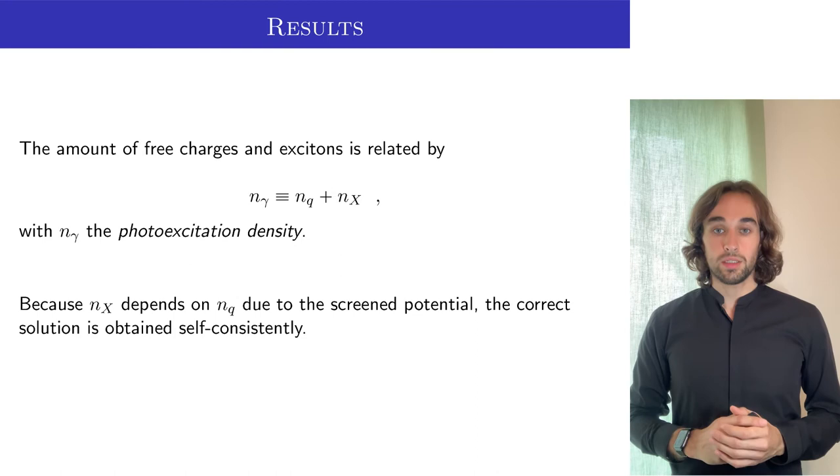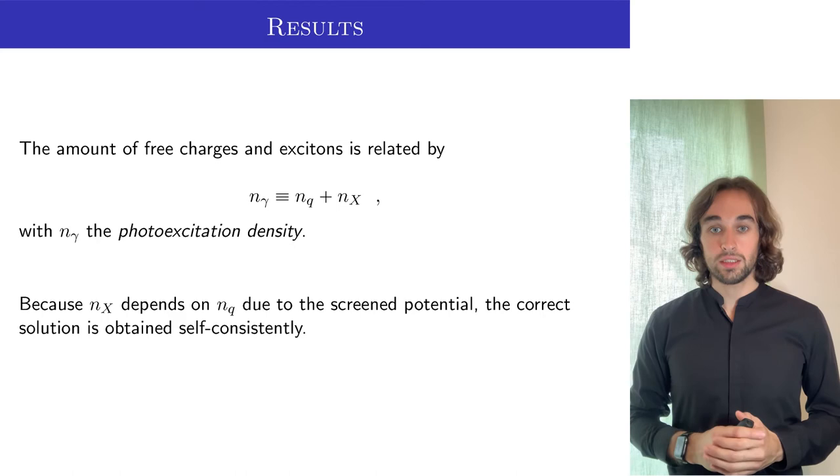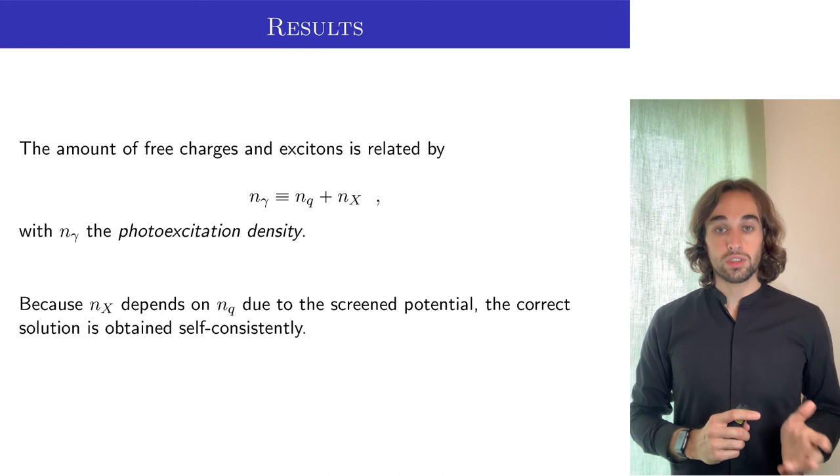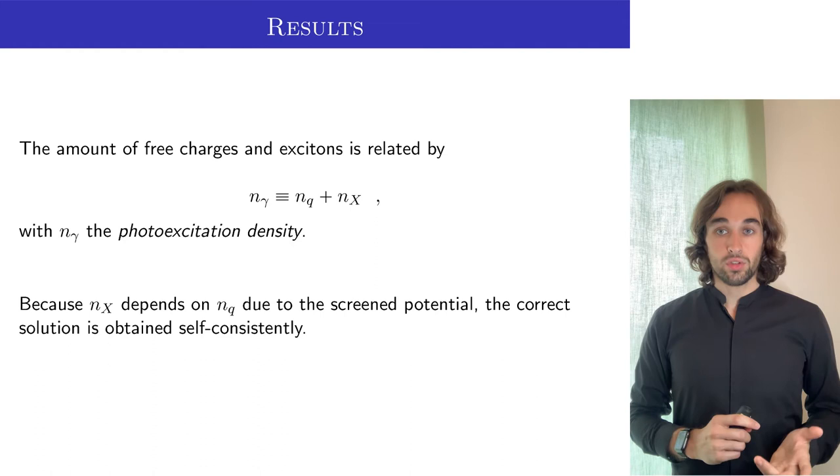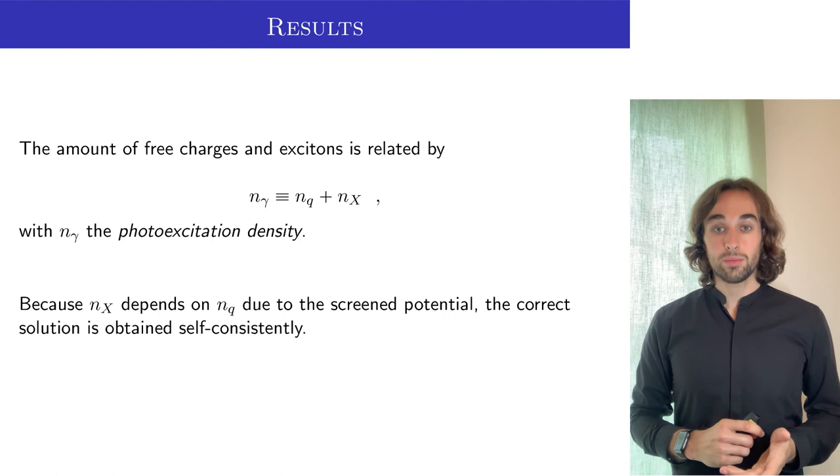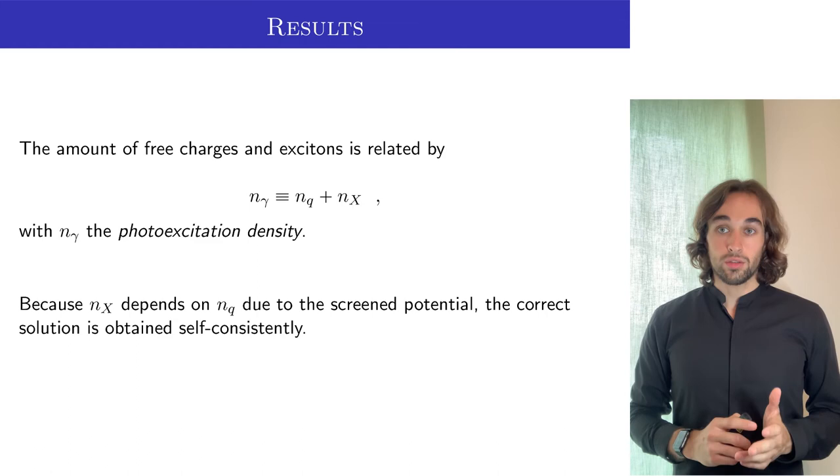In order to compare with experiments, we must use the same variables. Instead of the density of free charges in the background, which of course sets the binding energy of the excitons and therefore the density of excitons, we must use the photoexcitation density, which is connected to the pump laser. This photoexcitation density is the amount of photons that hit the sample and then produce an electron-hole pair there. Therefore, the density of free charges in the material and the density of excitons has to be equal to this photoexcitation density.